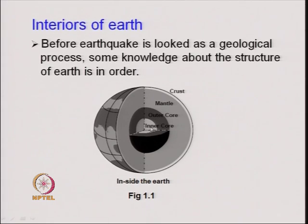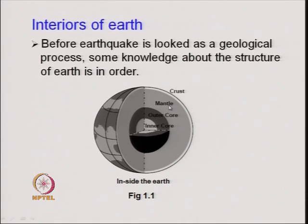Each layer — the inner core, outer core, mantle, and crust — has successively less density. The crust, although a solid object, has less density compared to the mantle. Similarly, the mantle has less density compared to the outer core, and so on. Each layer has distinct features, and these distinct features are the causes for many of the geological processes that take place within the earth.